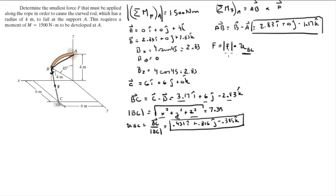And you know that the magnitude of F times this unit vector gives you the Cartesian vector form of F. So this is equal to 0.431F in the i plus 0.816F in the j minus 0.385F in the k.